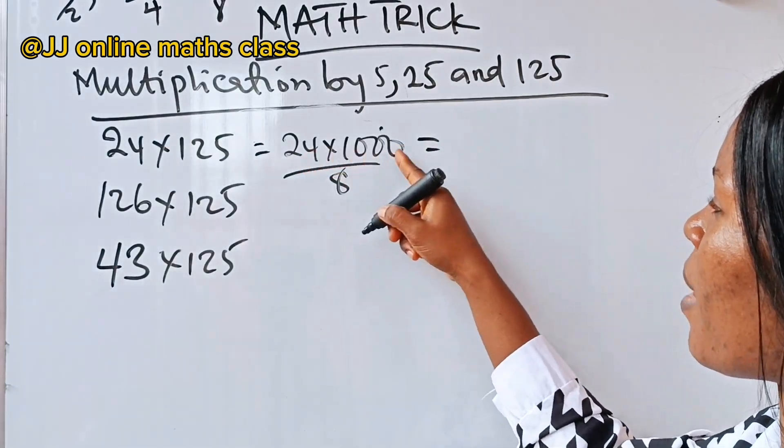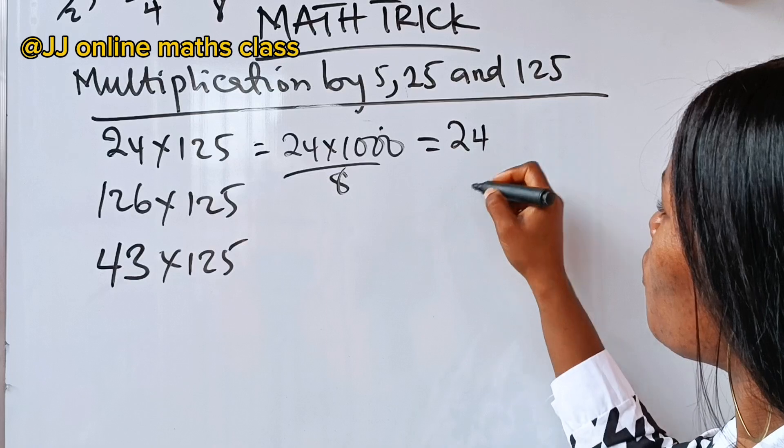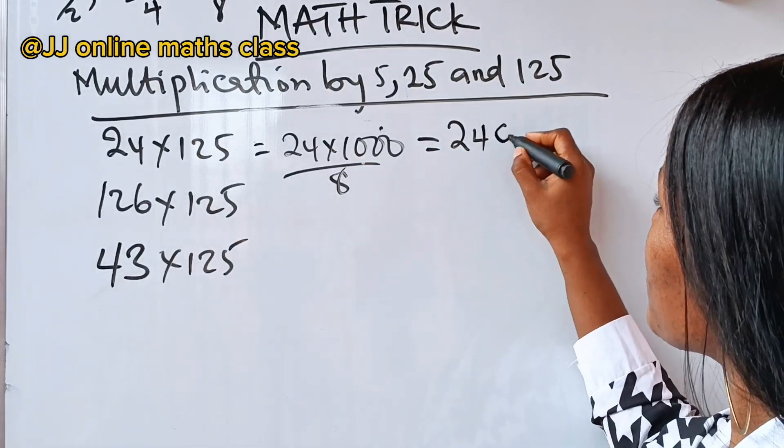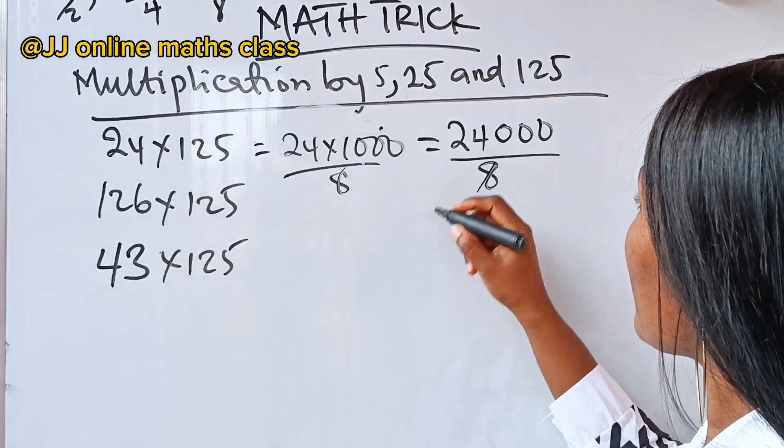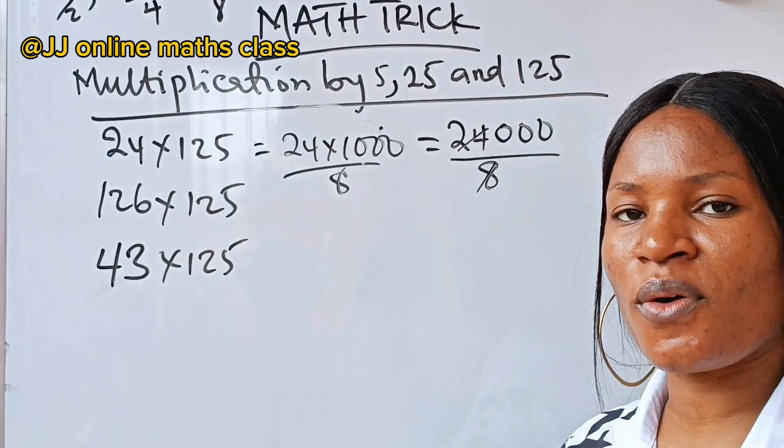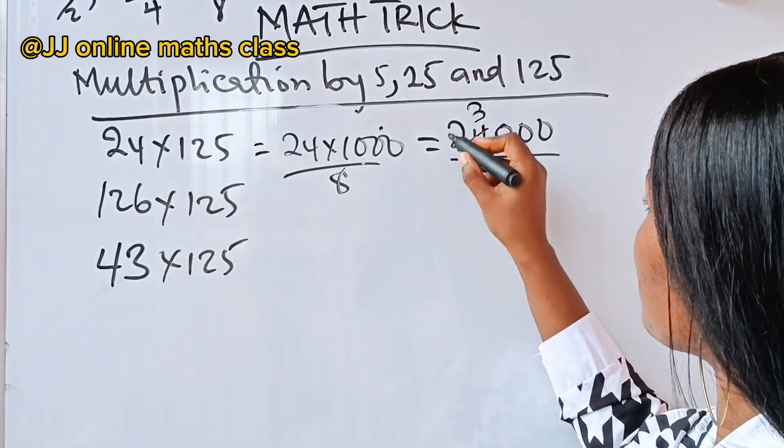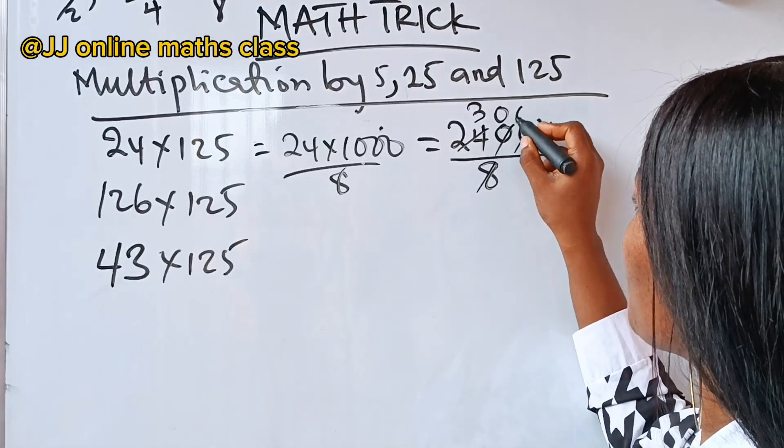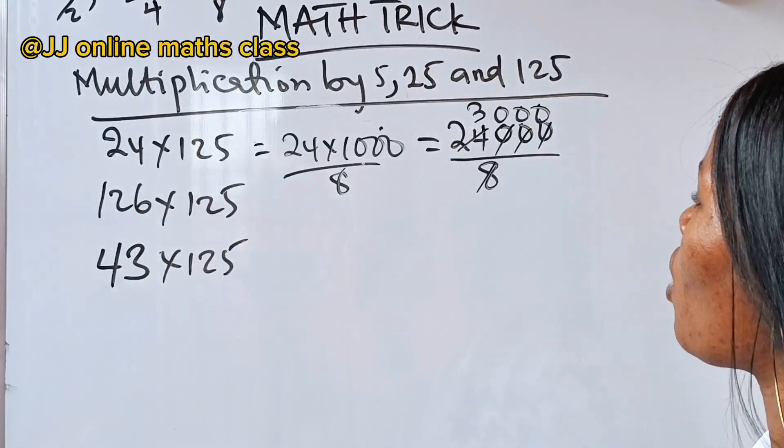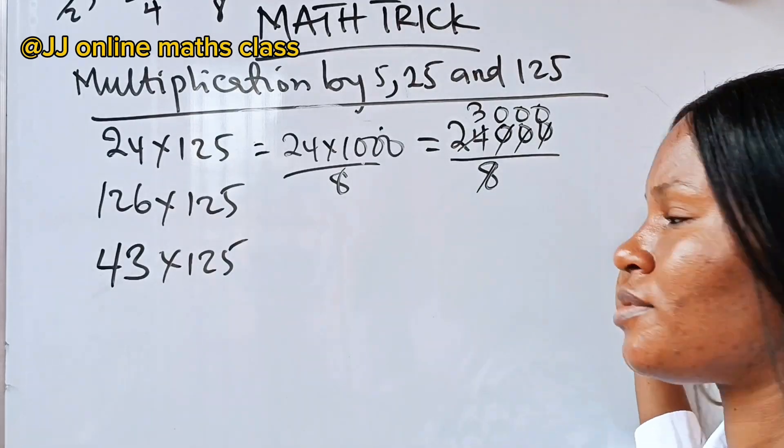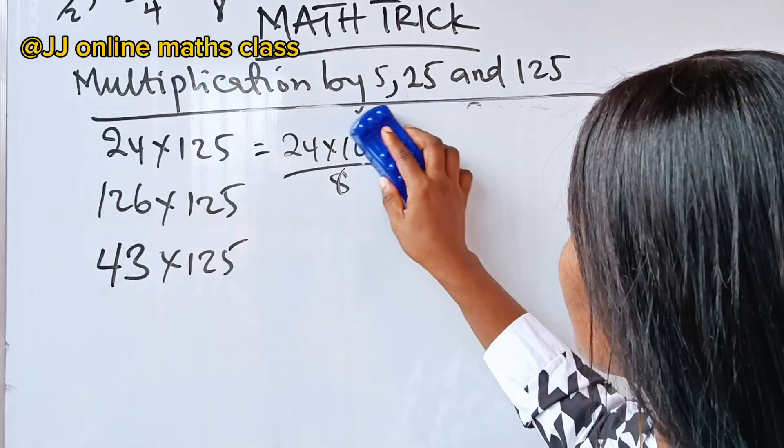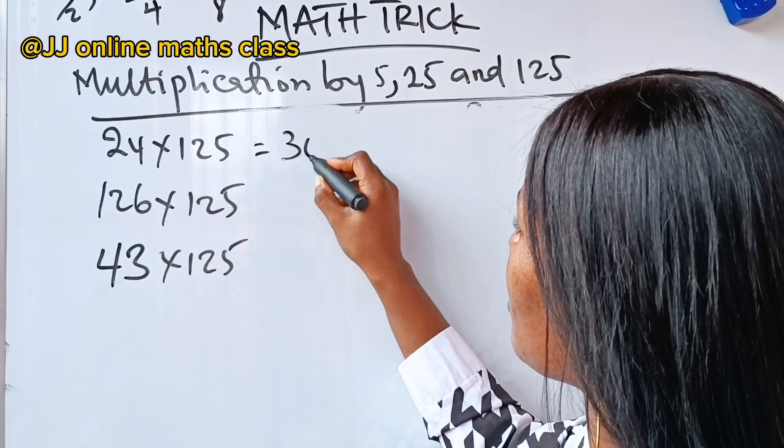Now, 24 multiplied by 1000 is just 24. You add three zeros in front of the 24. Then, you divide by 8. When 8 divides 24, you have 3, right? So, you have 3. Every other thing is zero, zero, zero. Therefore, 24 multiplied by 125 is 3000. That is it for this. So, we have 3000 here.